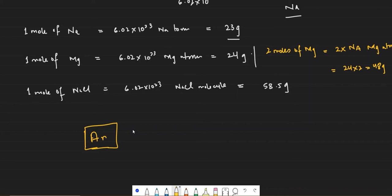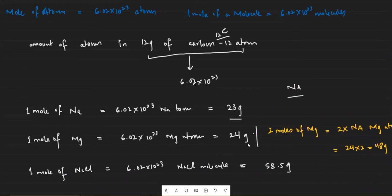So even in moles, we compare with carbon-12 because it is one of the most abundant elements on Earth. One mole of any substance contains the same number of particles as Avogadro's number of particles. But one mole of different substances will have different masses, because even though the number of atoms is the same, the atoms will have different numbers of protons and neutrons — so they weigh differently.